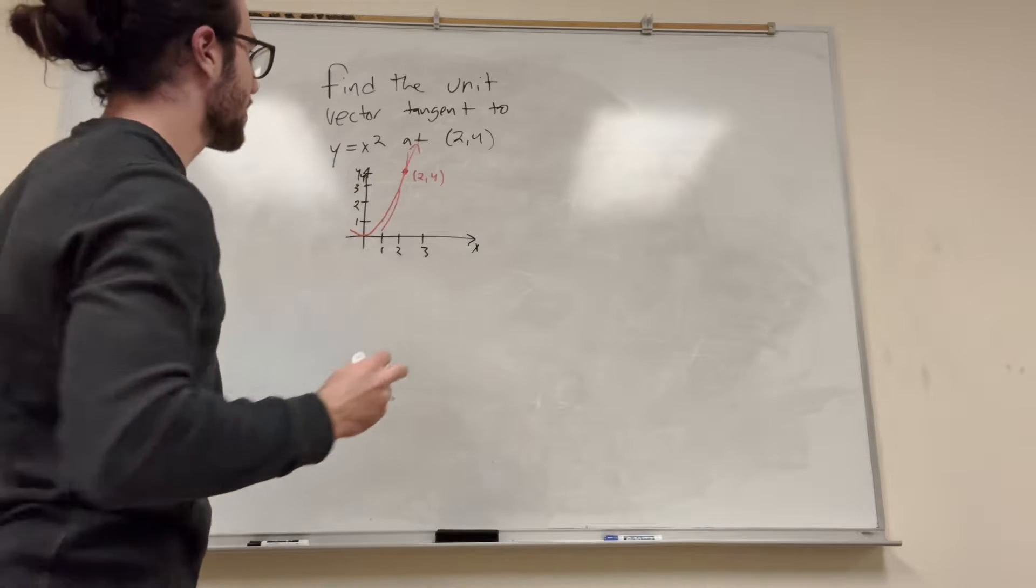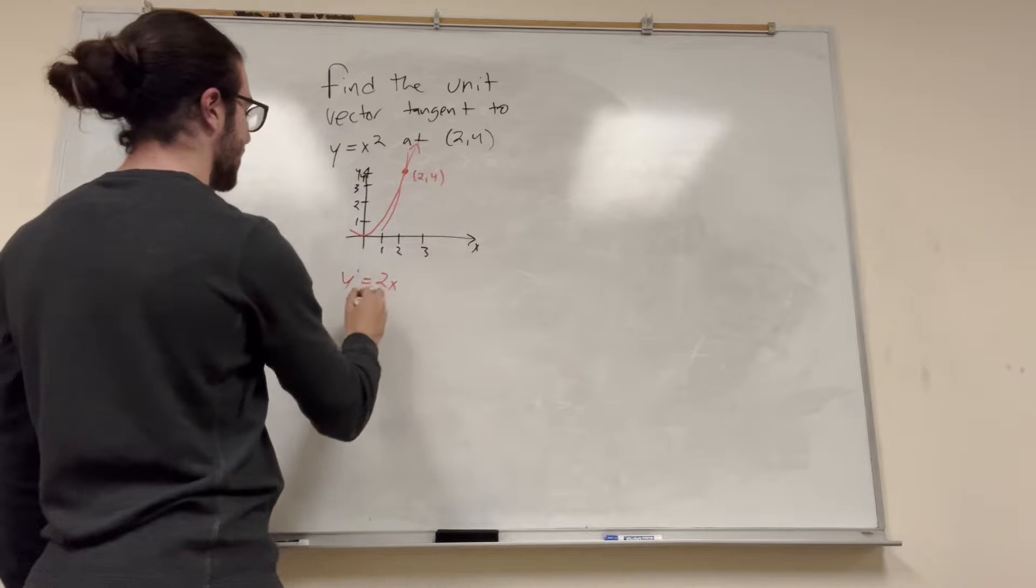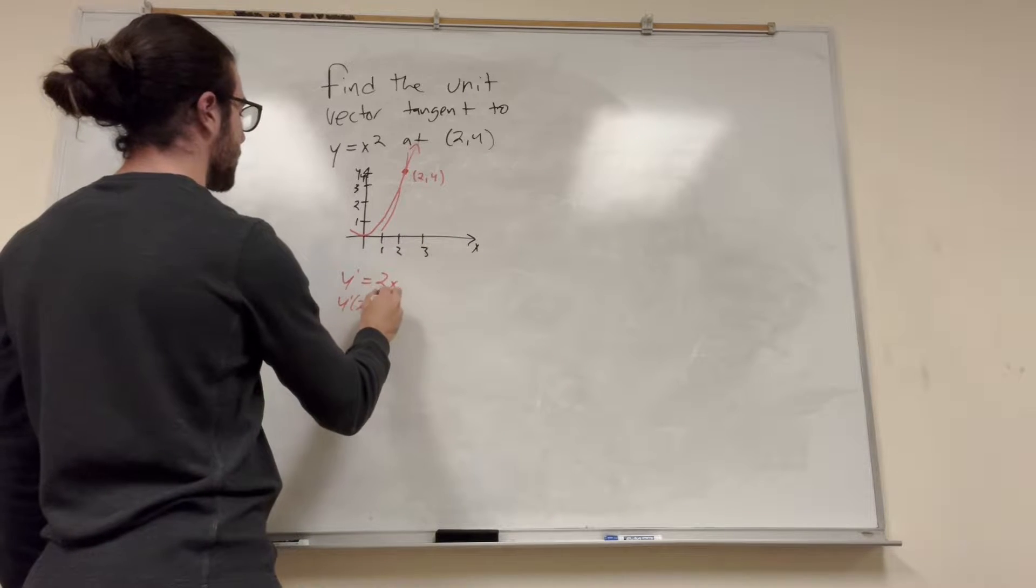So the slope of this line, well, we need to find the slope. So y prime is equal to 2x, x is equal to 2, so y prime of 2 is equal to 4.